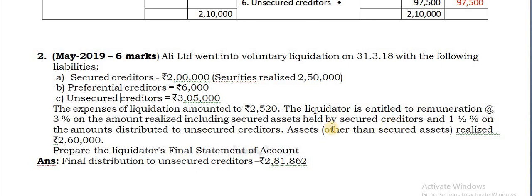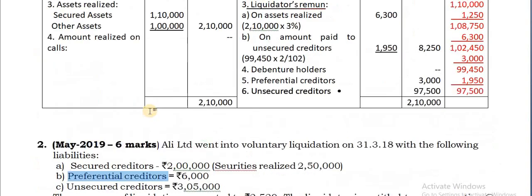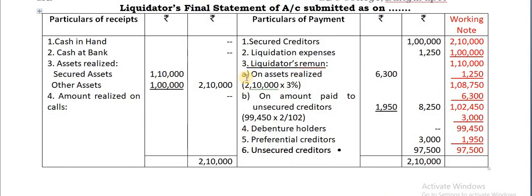You have to calculate the remuneration on the amount paid to preferential creditors also. So, as in the previous problem we had A and B, in this problem we will get C also. The three categories are: on assets realized, on amount paid to preferential creditors, and on amount paid to unsecured creditors.